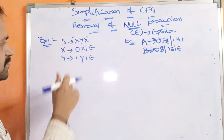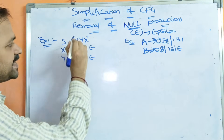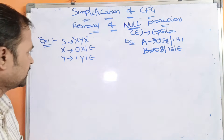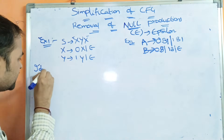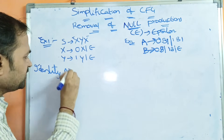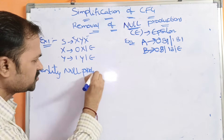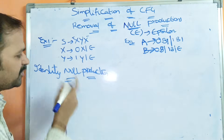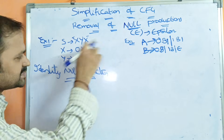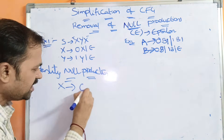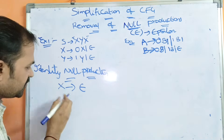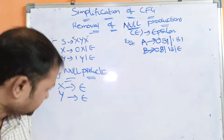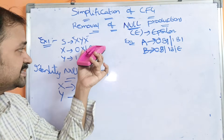The first example: S implies XYX; X implies 0X or epsilon; Y implies 1Y or epsilon. First, we have to identify null productions. The first production does not contain epsilon. The second production contains epsilon — X produces 0X or epsilon. The last production also has epsilon — Y implies epsilon. So we have two null productions to eliminate.